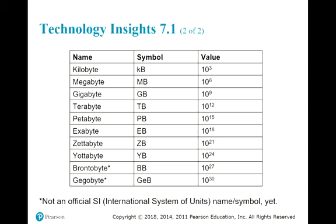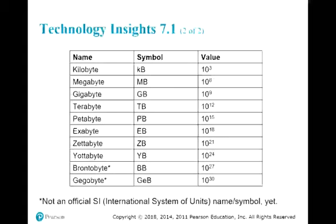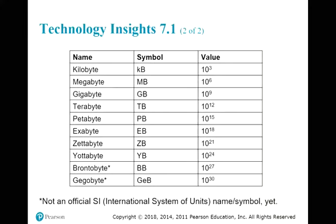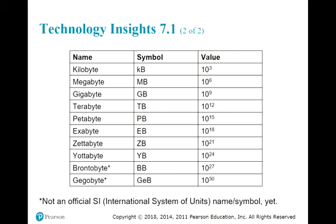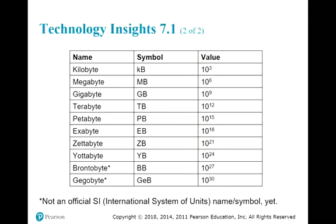To understand big data better, the first thing you need to know is how big the data is, and you need a point of reference. Most computers you buy today have 500 gigabytes, one terabyte, or two terabytes of hard drive. If we convert the entire Library of London into text, it's probably less than 10 terabytes — not including pictures, just text. So a regular person's computer today can actually house a library from the 1980s and 1990s.